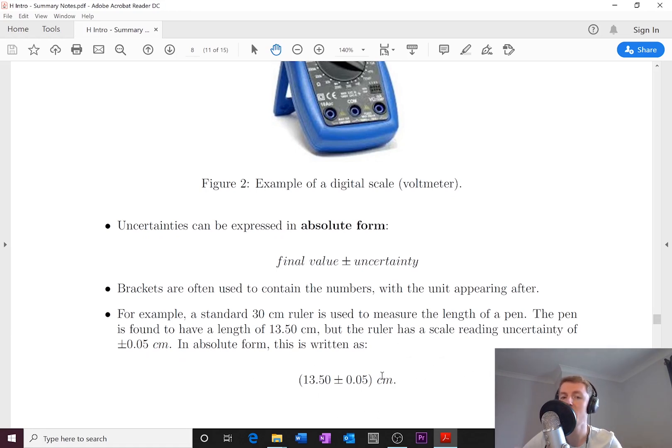But we could get a percentage uncertainty from this absolute form. All you do is take your absolute uncertainty, your 0.05, divide it by your measurement of 13.50 and times by 100. You take the number on the right, your uncertainty, divide it by the measurement on the left and times by 100. Hopefully quite straightforward on how to get percentage uncertainties there.